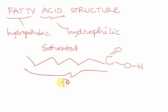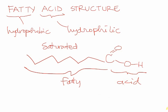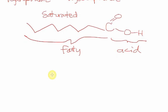This zigzag is my fatty part. And this C double bond O, OH, is my acid part. Now, another way of drawing a fatty acid is actually representing all the carbons and hydrogens that are shown without being shown in this zigzag.